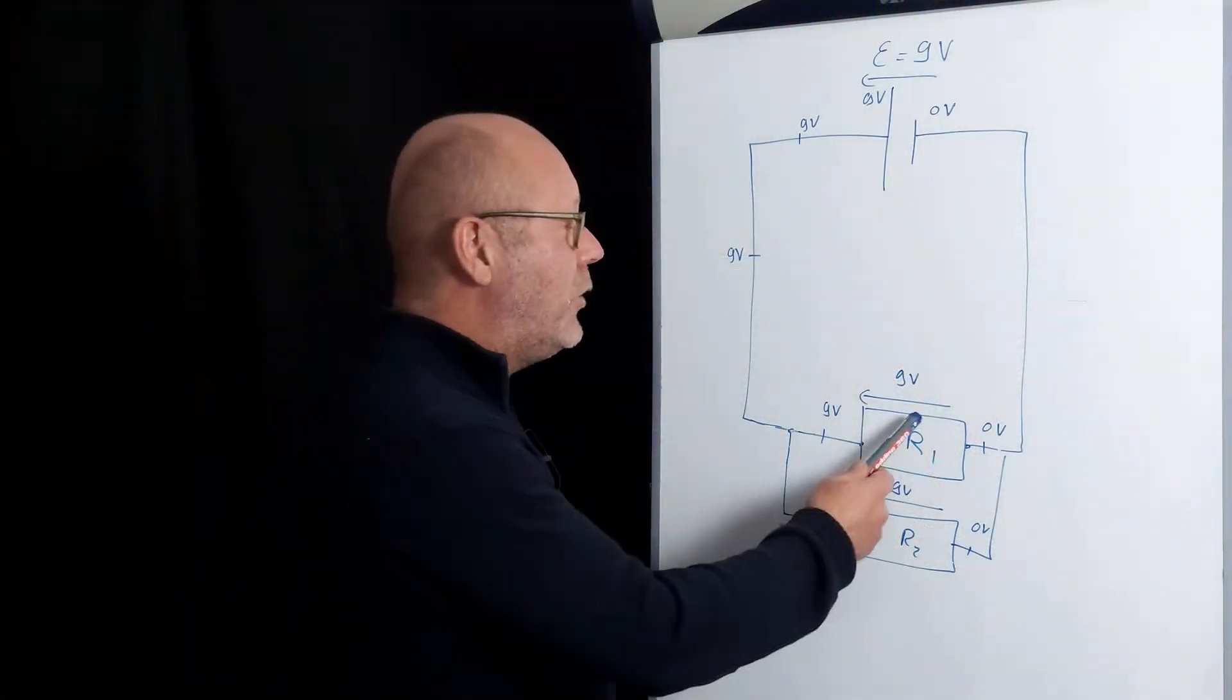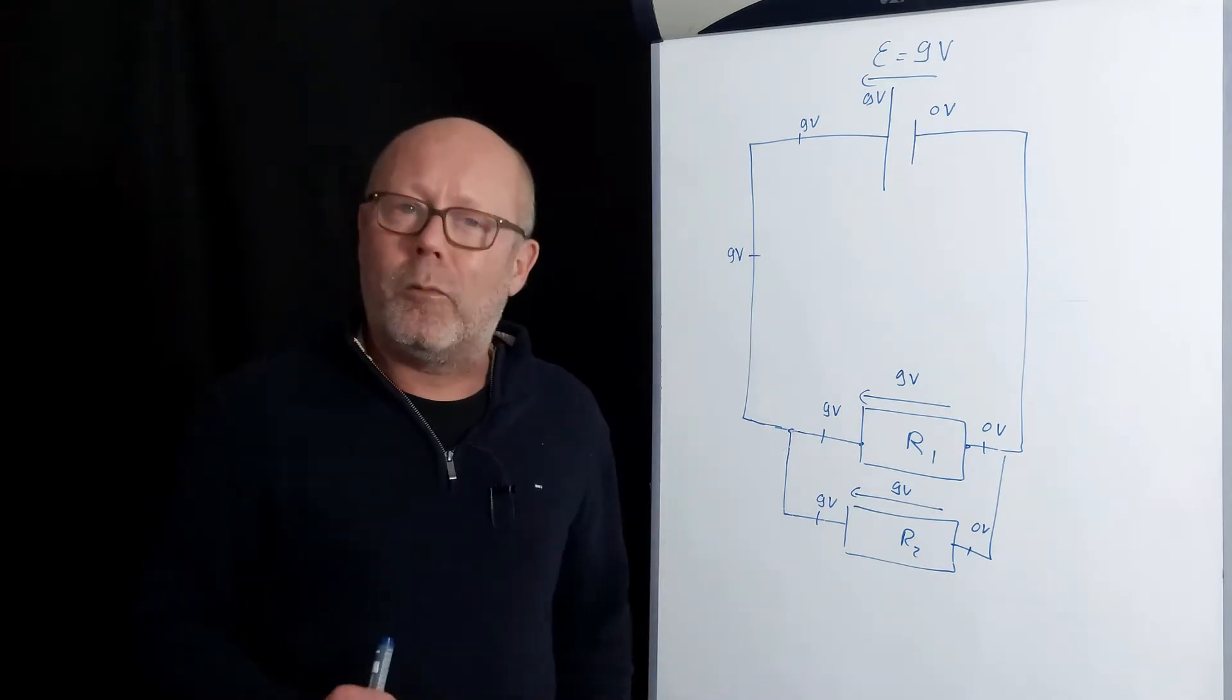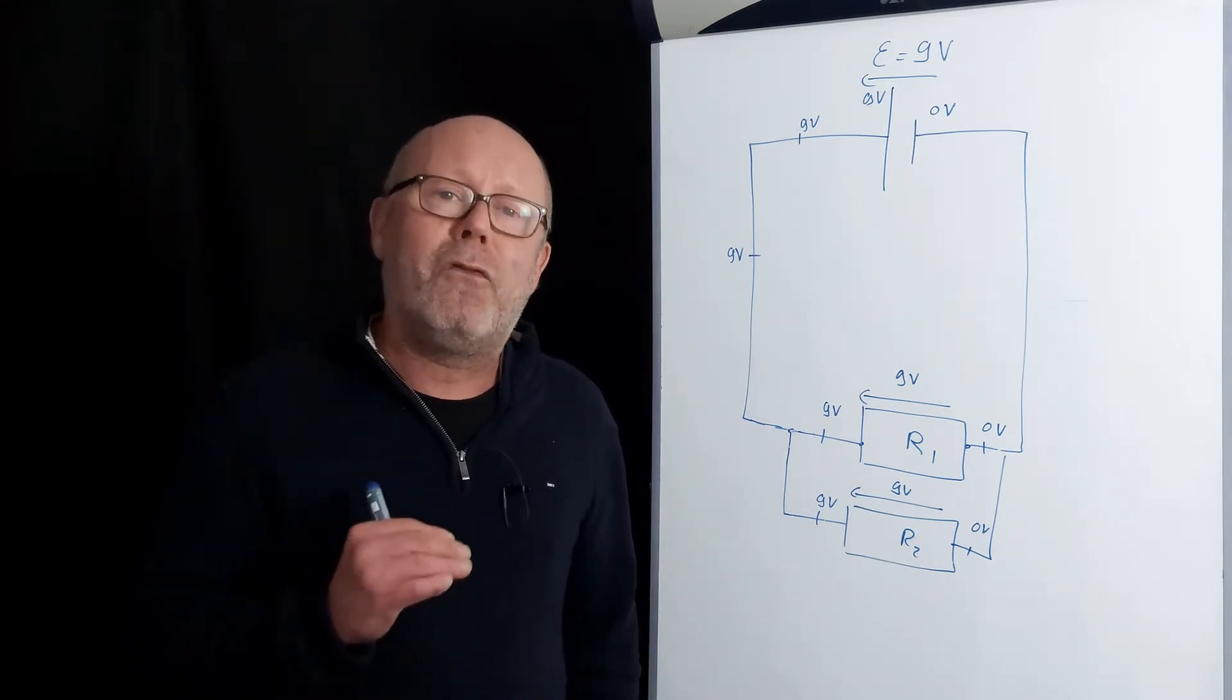So resistors in parallel will always have the same potential drop across them. The way I explained why two resistors in parallel have the same potential drop, here was a little bit informal.